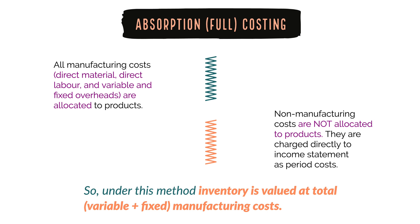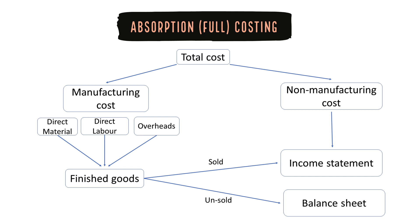Hence, in absorption costing, inventory is valued at full manufacturing costs. Now the same thing is explained here in the form of a diagram. In absorption costing, we start with the total cost and split the total cost into manufacturing cost and non-manufacturing cost. Non-manufacturing cost is charged directly to the income statement in the period in which they are incurred. And all the manufacturing costs, irrespective of whether they are fixed or variable, become part of the product costs.